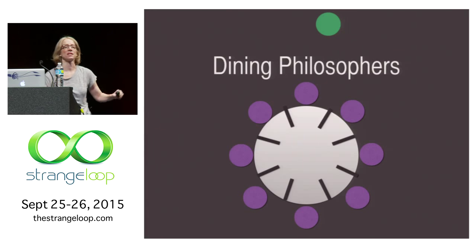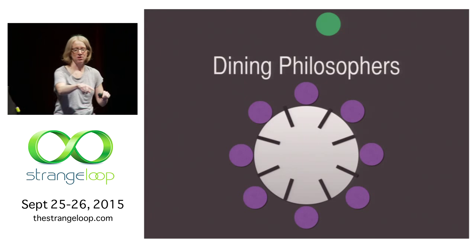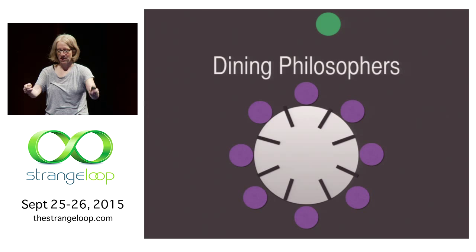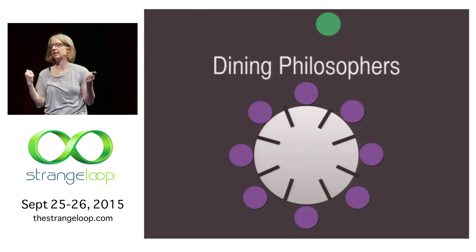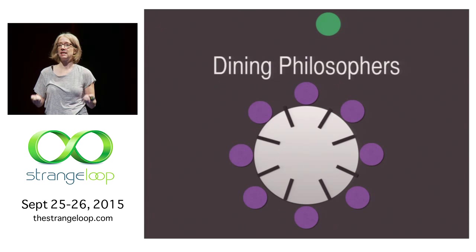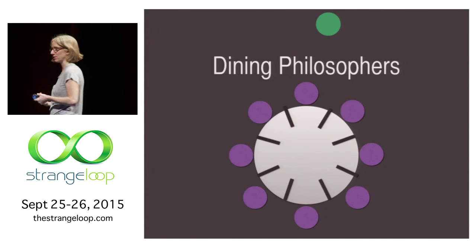The rule is for the dining philosophers, if a philosopher is sitting at the table and they have two forks available to them, they can pick it up and they can eat. And they become an eating philosopher. If they only have one fork or no forks, then they need to be a thinking philosopher. They have to continue thinking until they have forks available to them.